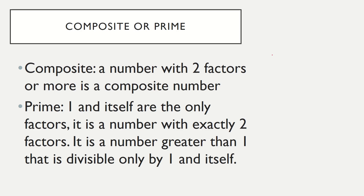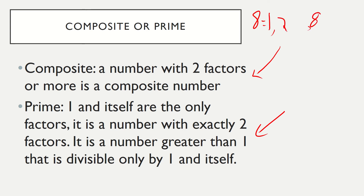What we're looking at today is the difference between a composite and a prime number. A number with two factors or more is a composite number. Let's take the number eight — the factors are one, eight, two, and four. One times eight equals eight and two times four equals eight, so we have four factors in total. Eight is an example of a composite number — we have more than two factors.